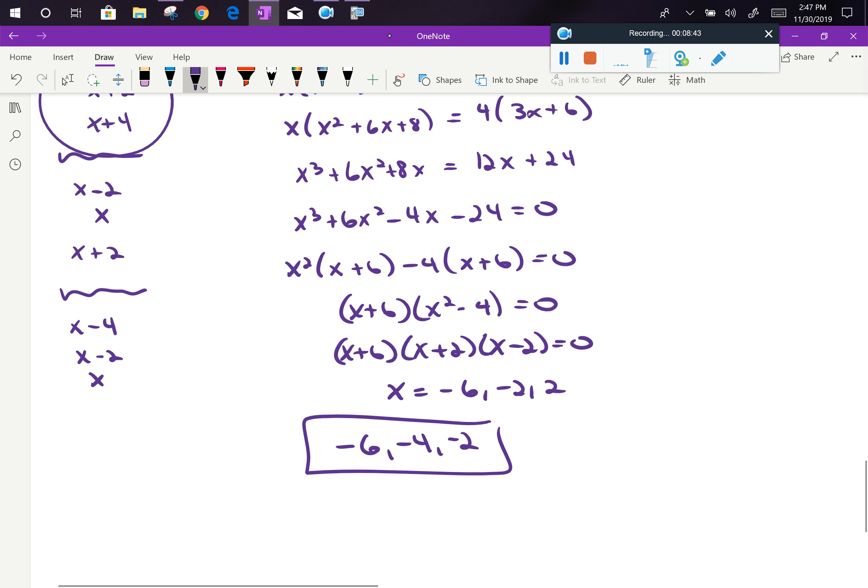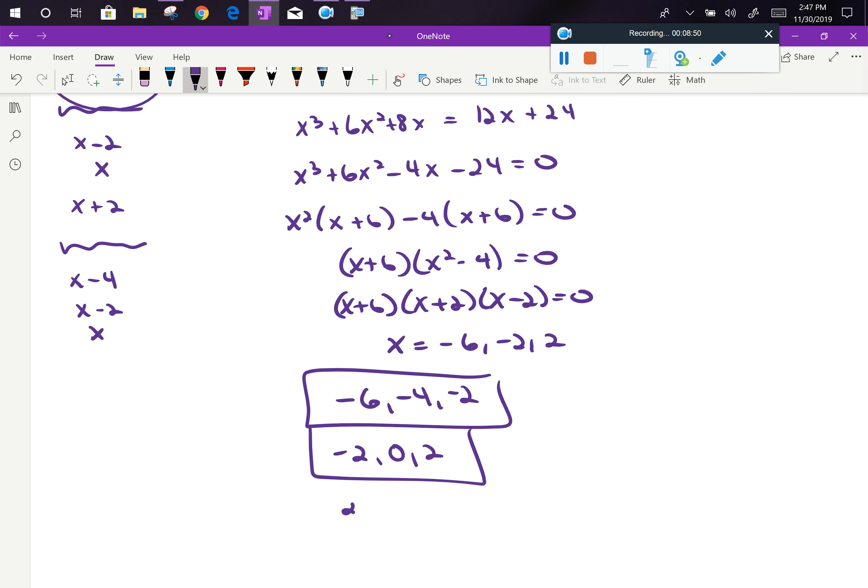But I also have a set starting at negative 2. So negative 2, 0, and 2. And I have a third set starting at 2. So 2, 4, and 6. There are three sets of consecutive even integers, which all satisfy the parameters of the problem. I need to make sure I give all three possibilities.